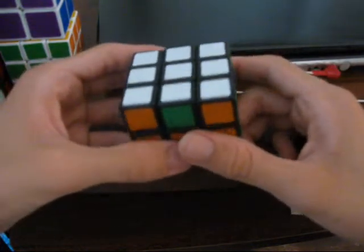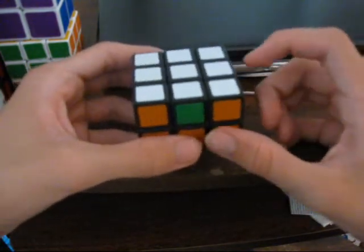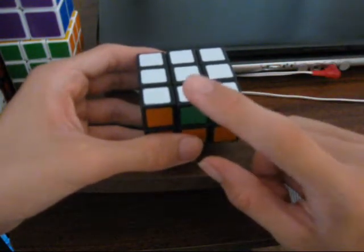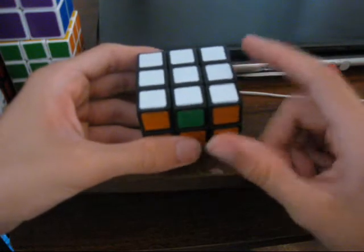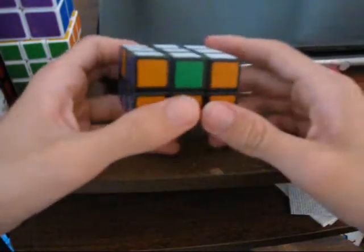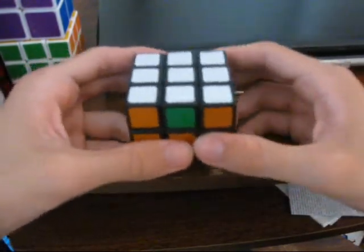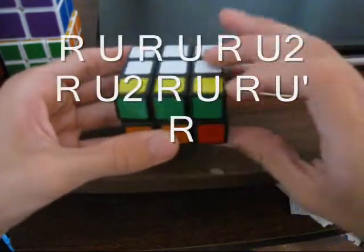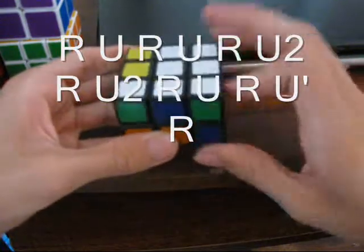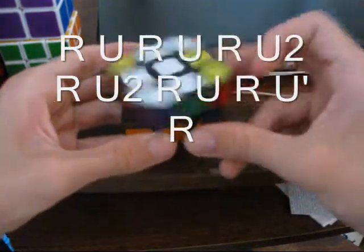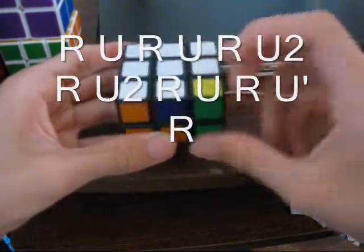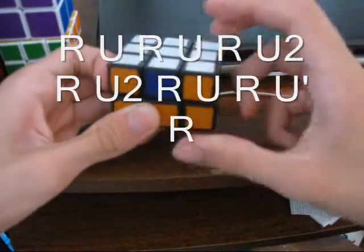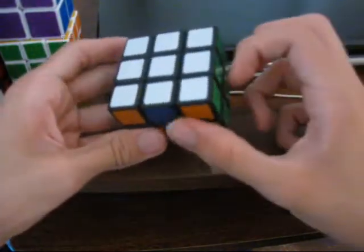So, the algorithm I'm going to teach is the adjacent edge swapper, which switches the up front and the upright edges. So, here's the algorithm. And they're switched.